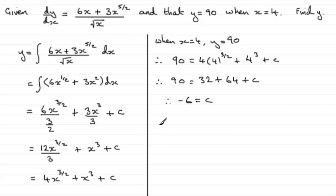So all we need to do then is substitute this back into our equation for y, and we can say that therefore y equals 4x to the power 3 over 2, plus x cubed, and then plus the constant of integration, which we now know is minus 6. And there you have your answer.